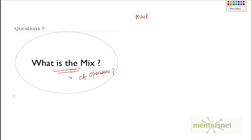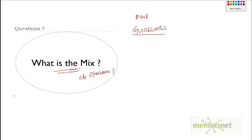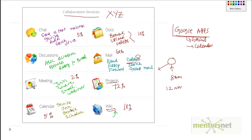To determine the mix, there are some guidelines that come from experience, understanding the services, and understanding the business need — what kinds of users there are and what their patterns are. The first guideline is to simulate a real user: simulate exactly what a real user is going to do. To do that, you must have a fairly good idea about the business context of the application. You need to understand the application in its production environment.